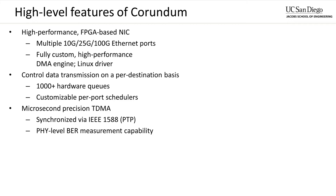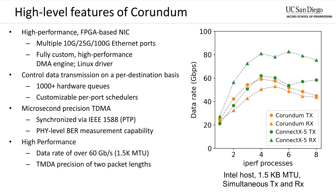This TDMA functionality also provides a very powerful PHY-layer BER measurement capability for characterizing optically switched links. The core Corundum data path is quite high performance and can support transfer rates of over 60 gigabits per second for 1.5 KB MTU frames on a 100 gigabit per second link. The plot on the right compares the performance of the Corundum NIC to a commercial Mellanox ConnectX5 NIC. In both cases, the link partner is another ConnectX5 NIC installed in an identical server. This data was collected using a variable number of iPerf processes to load the link in both the transmit and receive directions simultaneously.